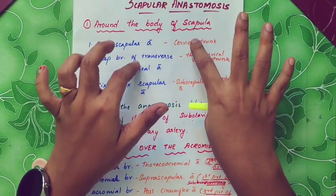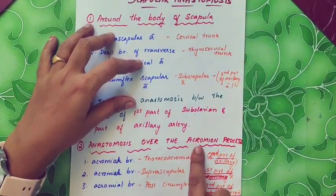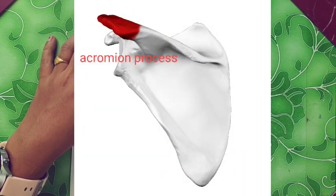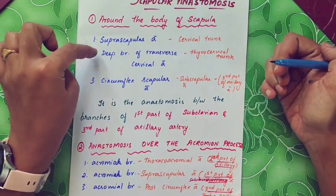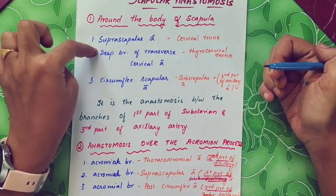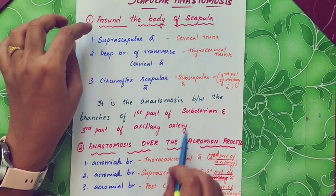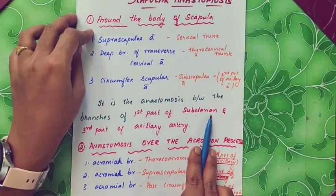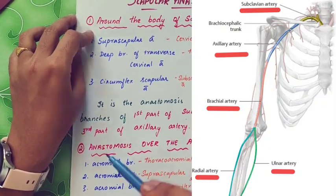The scapula has a body and an acromion process. In the acromion process, we can also see anastomosis. First, we will come to the body of the scapula. In the body of the scapula, anastomosis is between the branches of the first part of the subclavian and the third part of the axillary artery.